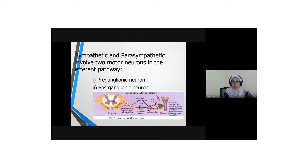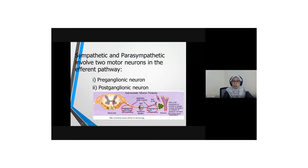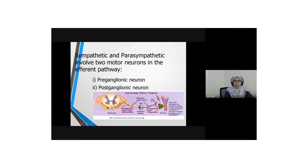The postganglionic neuron is longer when you compare with the preganglionic. And there are two synapses. For sympathetic, the first synapse neurotransmitter that is released is acetylcholine. And the second synapse, the neurotransmitter that is released is norepinephrine or NE.